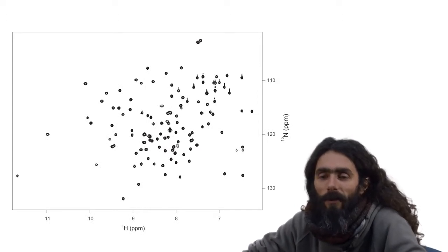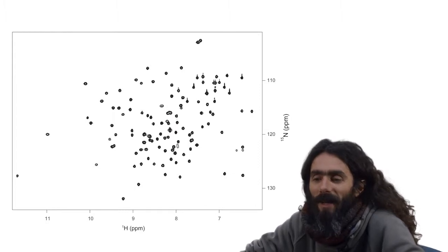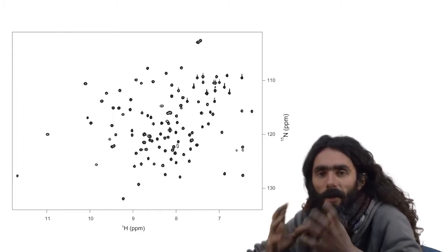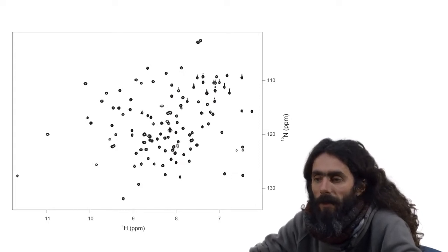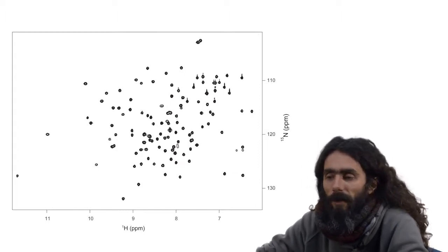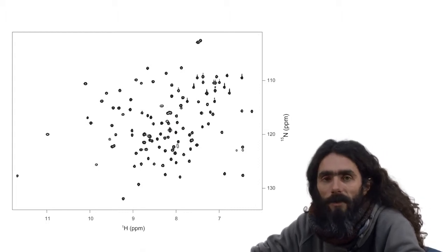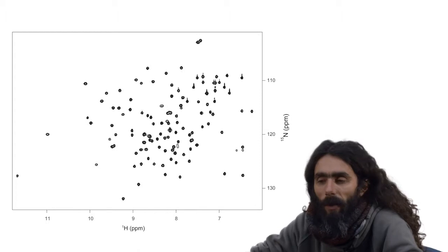Probably everybody is familiar with the HSQC spectrum, which is really just a fingerprint of a protein, and it's a lovely way of observing almost every amino acid residue in the protein. Here you can see an HSQC spectrum of a typical folded protein: lots of resolved peaks, easy to figure out and assign.